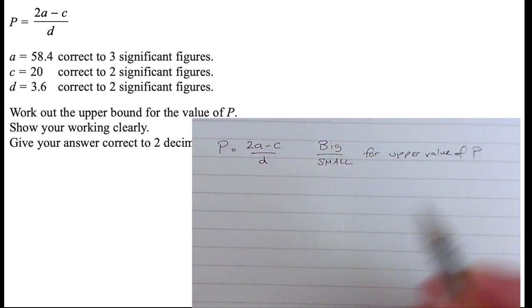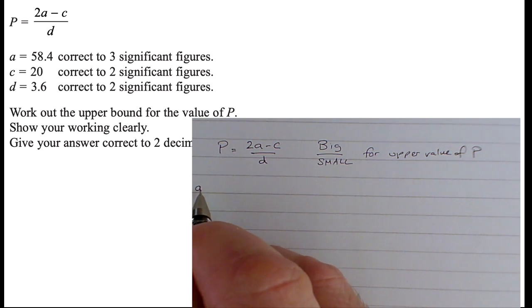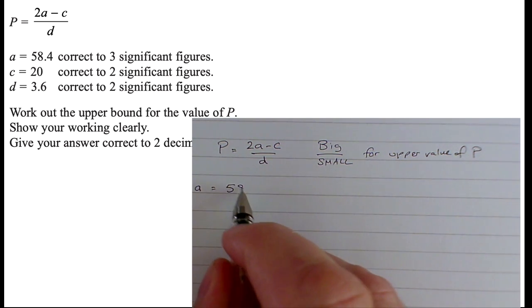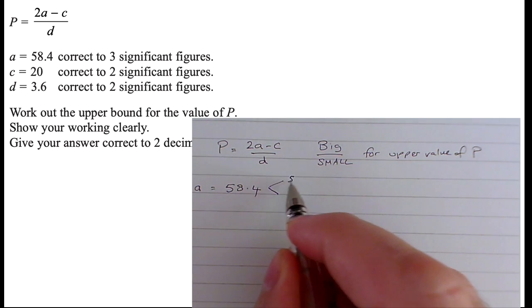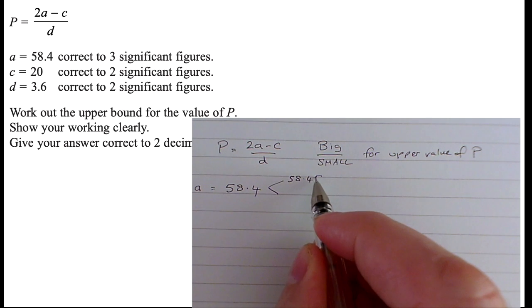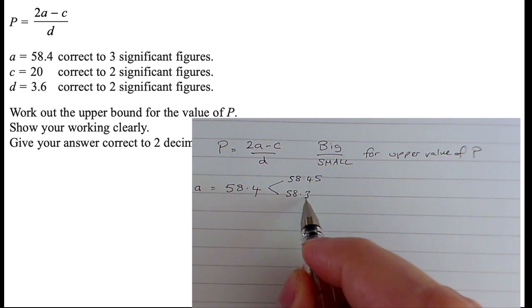So I need to find the upper and lower bounds for all my numbers. So a, well, a equals 58.4, so its upper bound is going to be 58.45. Its lower bound is going to be 58.35.